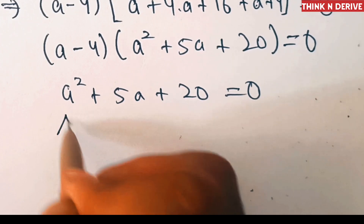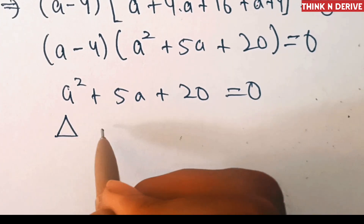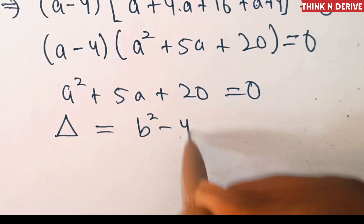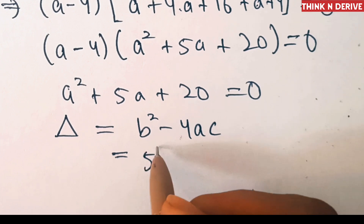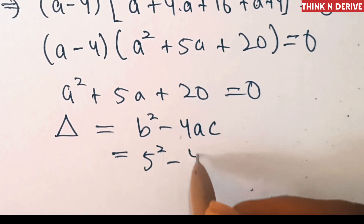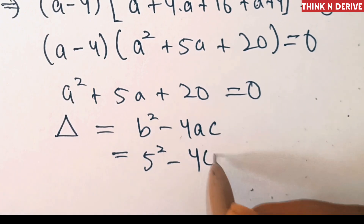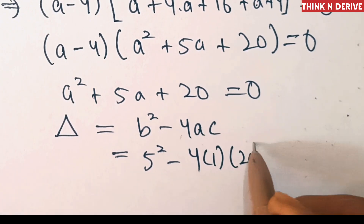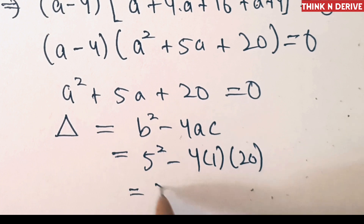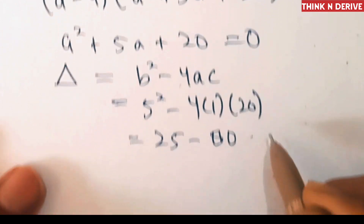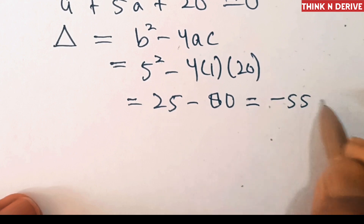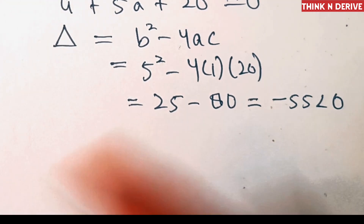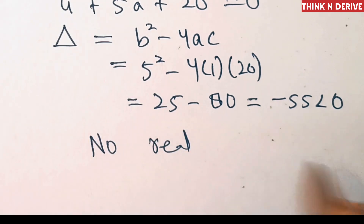We compute the discriminant: Δ = b² − 4ac, where b = 5, a = 1, and c = 20. So Δ = 25 − 4 × 1 × 20 = 25 − 80 = −55. Since Δ < 0, there are no real roots.